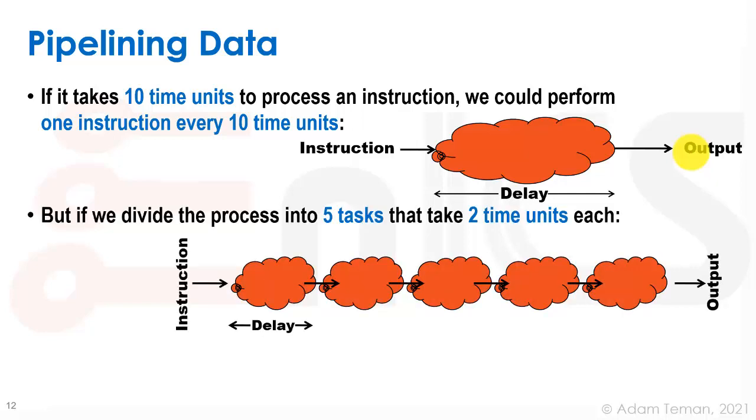But if we divide the process into several tasks, let's say five tasks, each task takes two time units each, then we can break it down. And every two time units, we can actually drive another instruction into the pipeline. Again, the first instruction will take the whole 10 time units at least to finish.